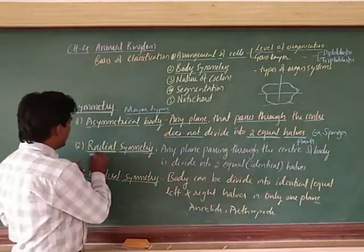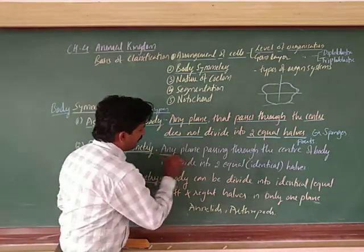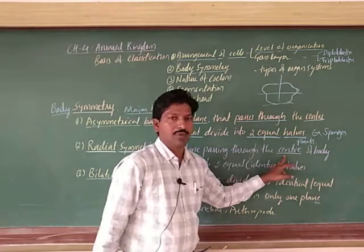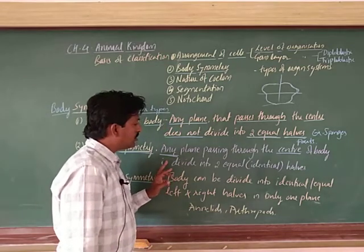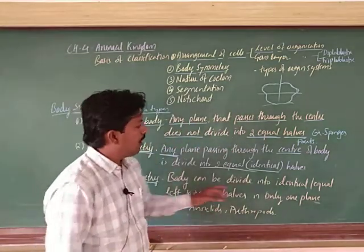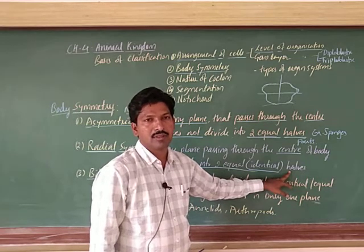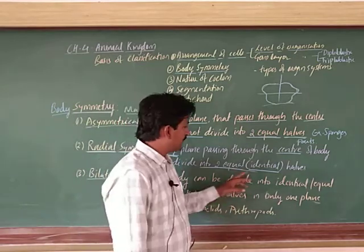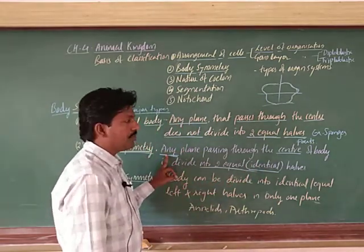Next is radial symmetry. Radial symmetry means any plane passing through the central axis of the body can divide it into two equal or identical halves. More or less, the internal structures are also the same in some animals. The morphology is almost equal. So we can use the term identical halves - identical parts are formed. Any plane passing through the central axis - this is very important.